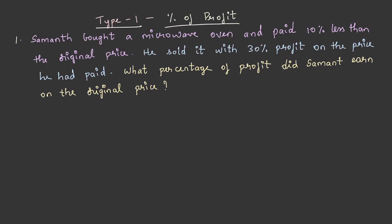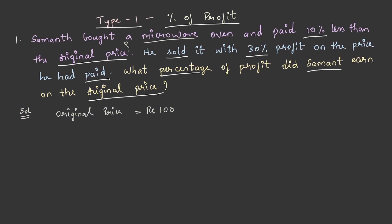Let us determine the percentage of profit. Samanth bought a microwave oven and paid ten percent less than the original price. He sold it at a thirty percent profit on the price he had paid. What percentage of profit did Samanth earn on the original price? We don't know the original price, so let us take it as rupees 100. If he pays ten percent less, his cost price is 100 minus 10, which equals rupees 90.